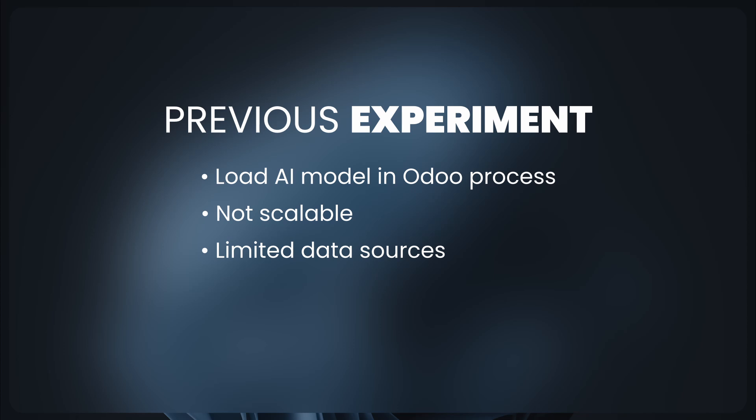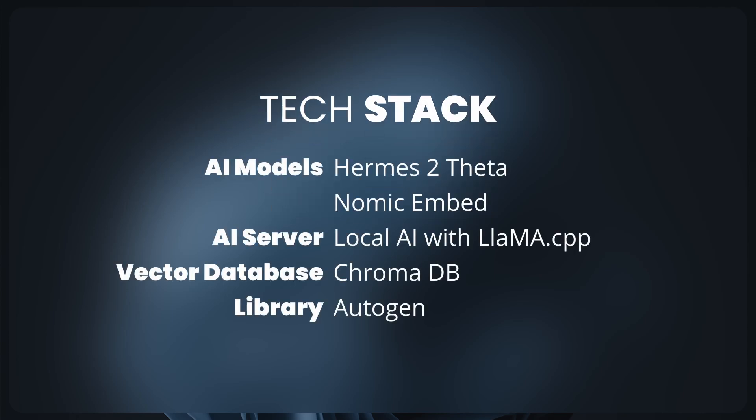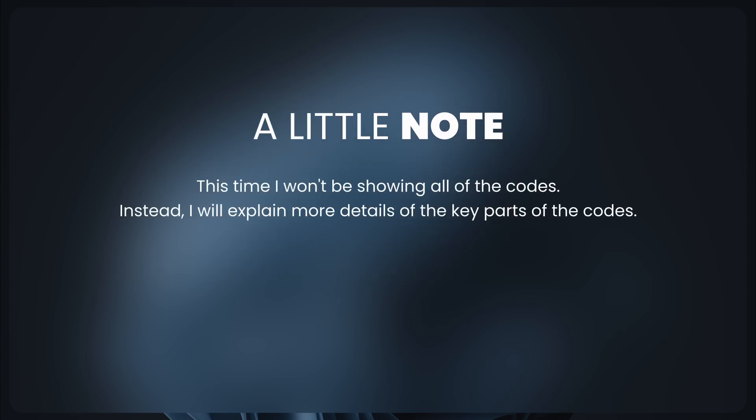With RAG we can dynamically add information regarding the Odoo database, so in theory we can query any data from the database. Let's take a look at the tech stack we'll be using. We'll be using LocalAI with llama.cpp as the backend and an AI model called Hermes 2 Theta. We're also going to use LocalAI to generate embeddings for our RAG with a model called Nomic Embed, and we'll use Chroma DB as the vector database.